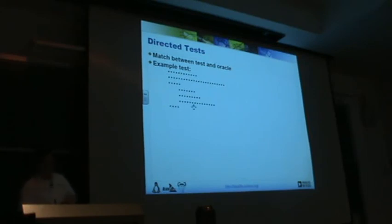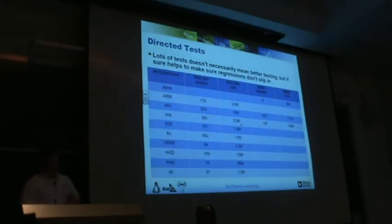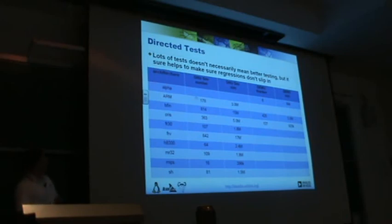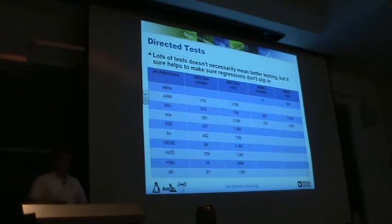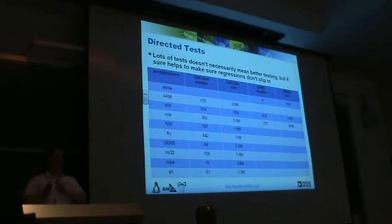There are lots and lots of directed tests, both in the GNU simulator and in QEMU. These are the number of individual test files and the size of that directed test source. You can see the GNU SIM has lots and lots of directed tests, because it was primarily developed by the GNU community, who likes to have lots of directed tests — they do a lot of compiler testing and GDB testing, and want to ensure there are no regressions when somebody fixes a bug. QEMU really doesn't have that in the same way.